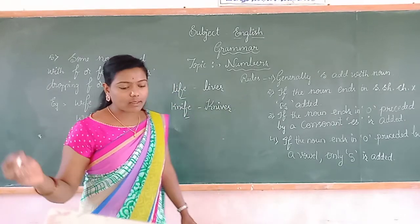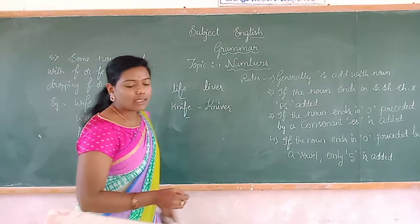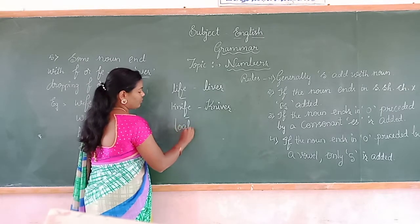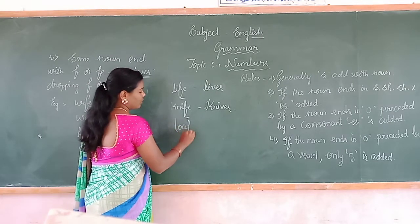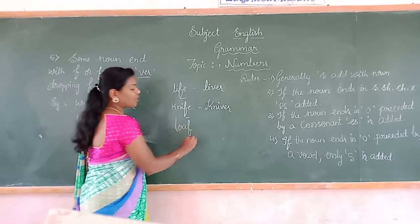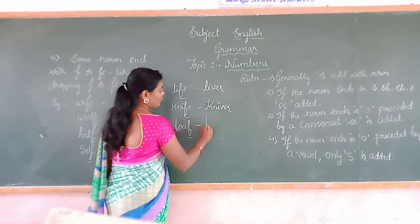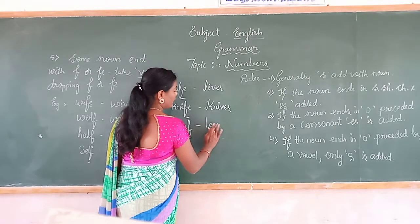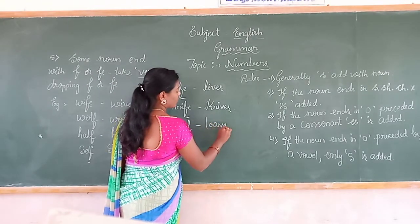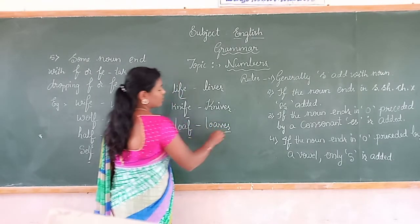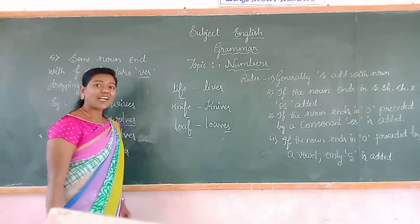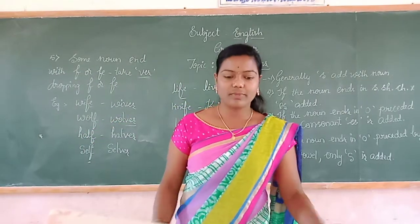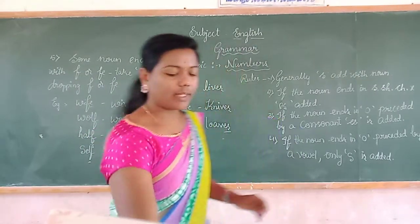One more example: 'loaf' ends with F, so we add VES — 'loaves.' Clear? Next one.